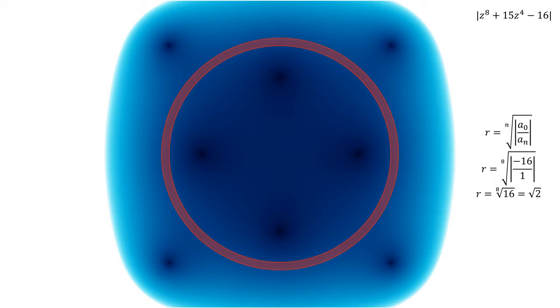Let's look at this polynomial, which is z to the 8th plus 15z to the 4th minus 16. Using our equation from Ehrlich, we can figure out how large to make our circle. In this case, we'll take the 8th root of negative 16 over 1 in absolute value. This means our radius is of size square root of 2.